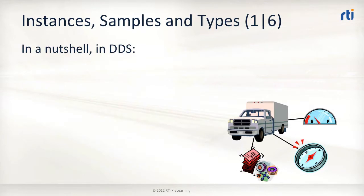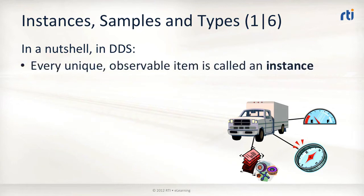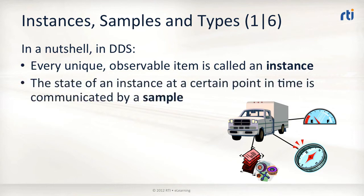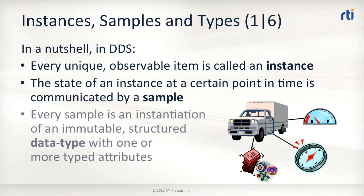The DDS concepts of instance, sample, and data type can very concisely be defined as follows. Every observable item in DDS is called an instance. At any moment in time, each instance has a state. The state of the instance at a certain moment in time is communicated by means of a sample. The samples themselves are instantiations of immutable structured data types with one or more typed attributes.